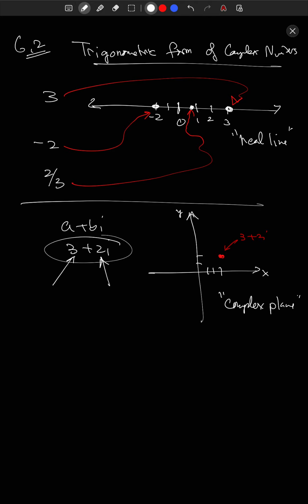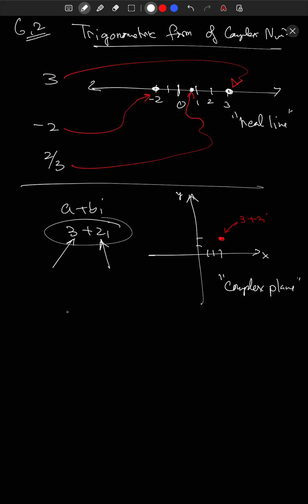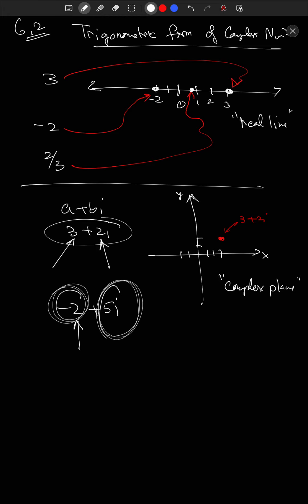This is how you would plot complex numbers. You have to plot them on an axis, and we usually call this the complex plane, in contrast to the real line. So complex numbers have to be drawn in a plane. For example, minus 2 plus 5i would mean two steps to the left. The horizontal axis represents the real part and the vertical axis represents the imaginary part. So minus 2 means two steps to the left, and plus 5i means five steps up — that's minus 2 plus 5i. Down here, minus 2 minus i. And this point right there would be 2 minus i.